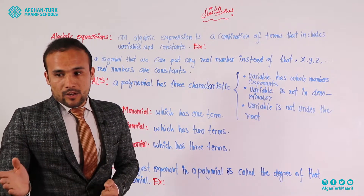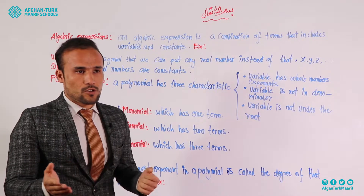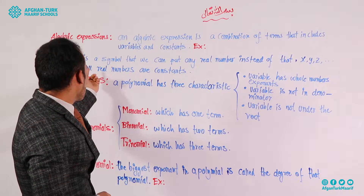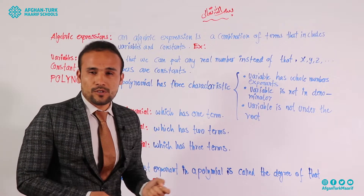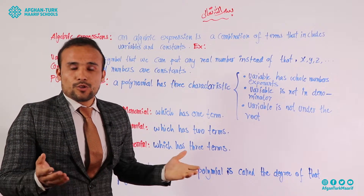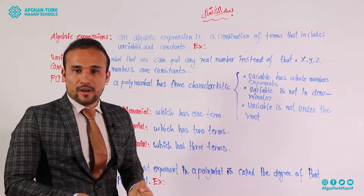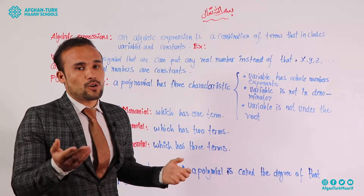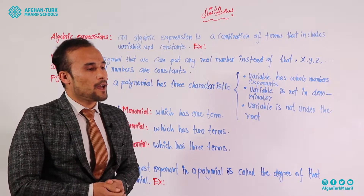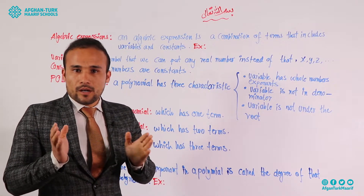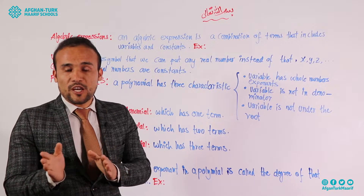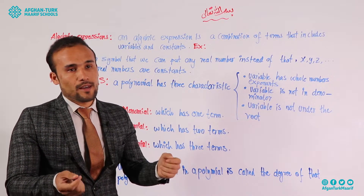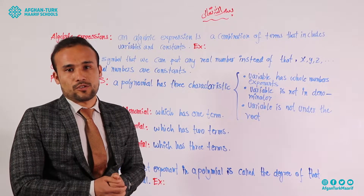On the other hand, what is a constant? A constant — as I wrote on the board — all real numbers are constants. For example, 2, 3, 4, 5, or any real number — you know, square root of 2, square root of 5 — that's called a constant. And any real number that can't be changed is called a constant.